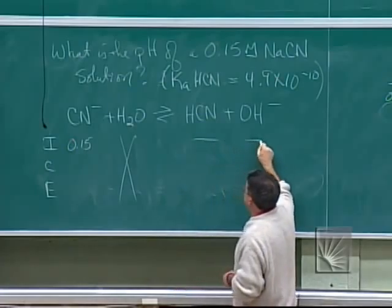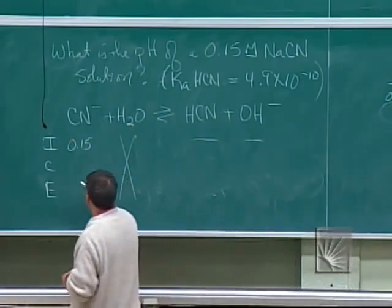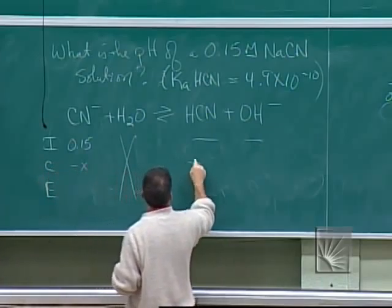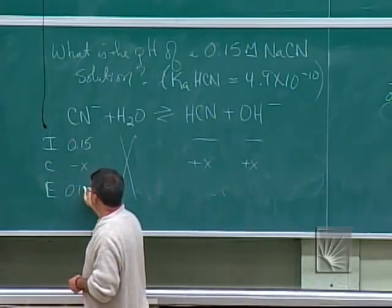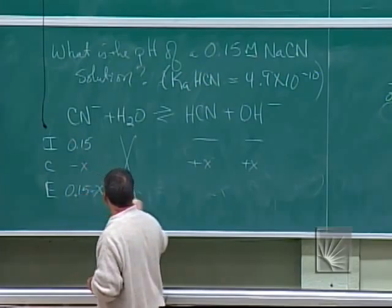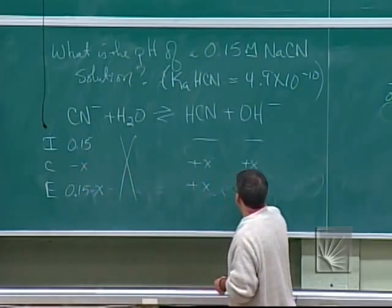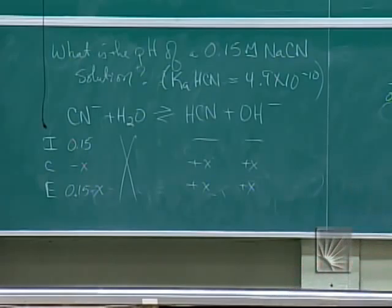My initial concentration of cyanide ion is 0.15. How do I know? Because sodium cyanide is a strong electrolyte. It breaks apart into its ions. Water? Who cares? It's just water. HCN, we don't know. OH minus, we don't know. If this reacts, this is what will happen, minus X, plus X, plus X. And so at equilibrium, 0.15 minus X, plus X, plus X. Alright, so far so good. Nothing's changed from everything else we've done so far. Now comes the hard part. I need the value of the equilibrium constant.